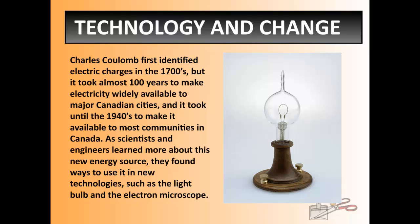Electricity was first identified in the 1700s as an electric charge by Charles Coulomb. He said there's something here causing it to change. It took a hundred years before someone finally said we can actually start to use electricity, and then until the 1940s it was available to everybody — before that only select major centers might have it. As scientists and engineers learned more about this new energy source, they found ways to use electricity differently — better light bulbs, energy used for electron microscopes, and all sorts of different things. All because somebody in the 1700s first had this idea of a current or electrical charge.